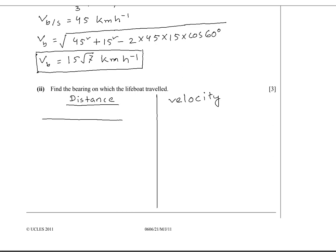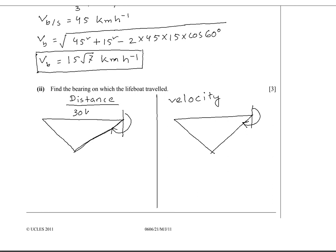Let's sketch a triangle and add a north-south line to find the bearing. Drawing a similar figure on the right part as well. On the left part, let's put the values: 30 kilometres, 30 kilometres, and that side is 10 kilometres. The angle between them is 60 degrees. The opposite side of 60 degrees is 10 times square root 7.